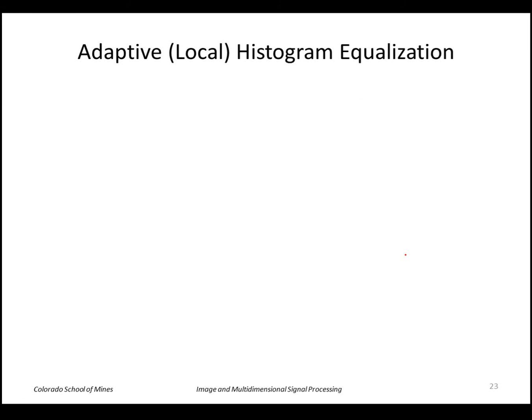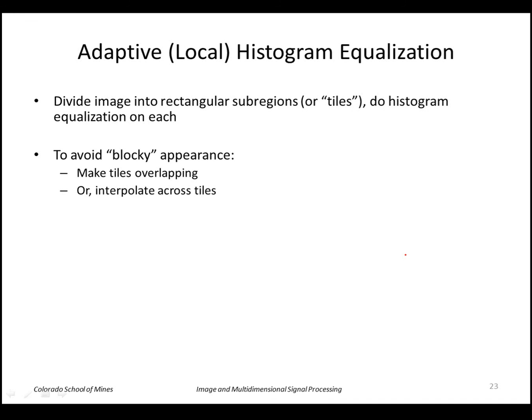Finally, an improvement on the histogram equalization is to make it local or adaptive. The regular histogram equalization is a global method meaning it applies the same transformation to every pixel in the image. However if your image differs in contrast from one region to another we can take that into account by applying histogram equalization on each region.